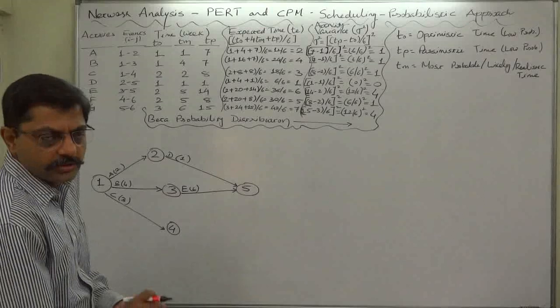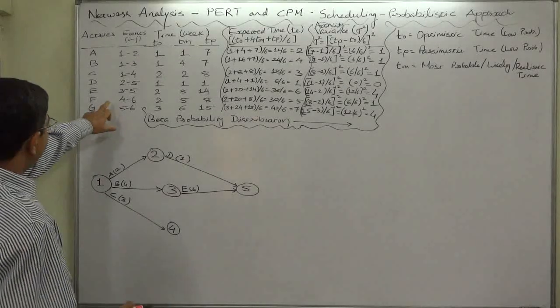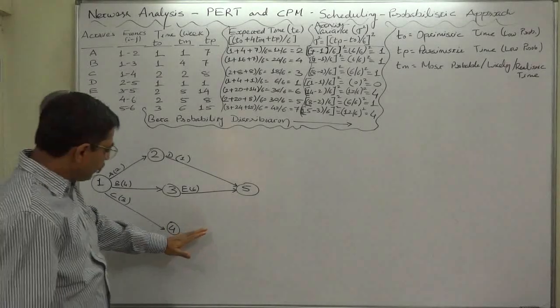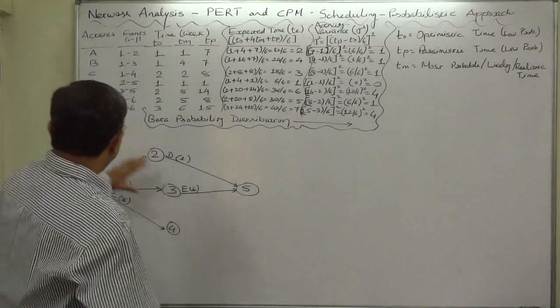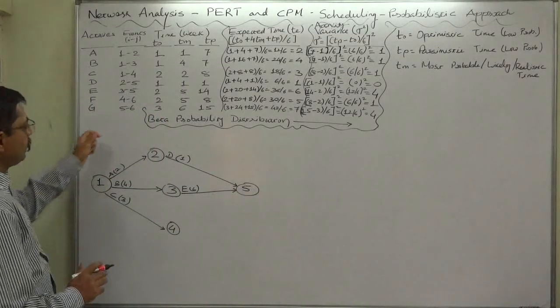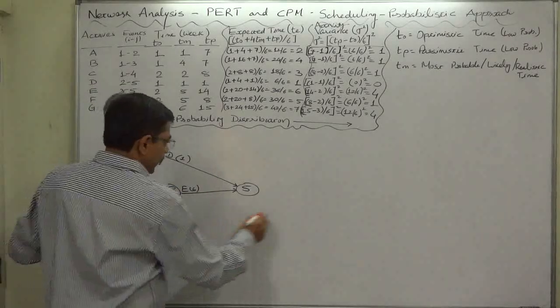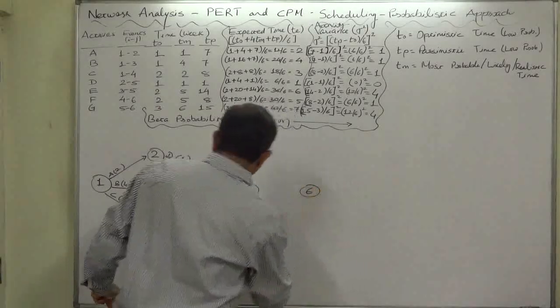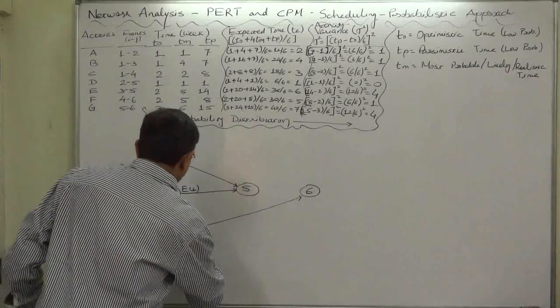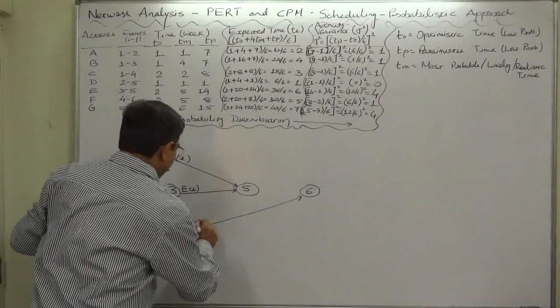Now, f is going to node number six starting from node number four, and g is also going to node number six but starting from node number five. So a, b, c, d, e, f - node number six will be the end event. This is f, and f is expected to take five weeks of time, and g is expected to take seven weeks of time.